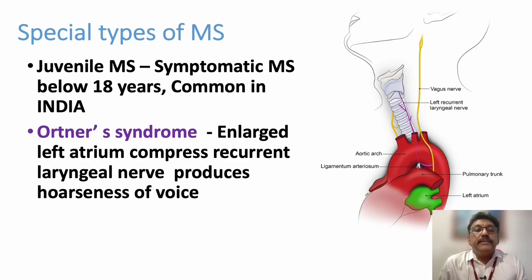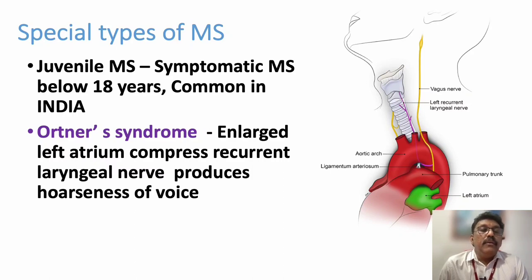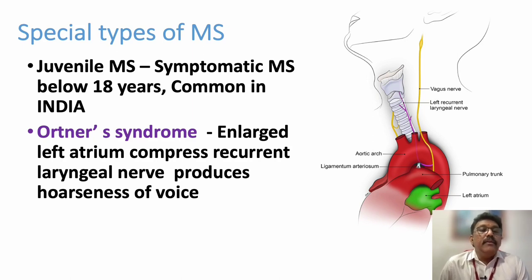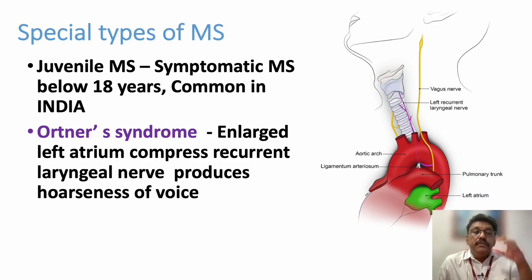There are some special types of mitral stenosis, especially in India. Juvenile mitral stenosis is very common because most patients present to the doctor after many years, as there are initially no symptoms. But in our country, because of repeated attacks of rheumatic heart disease, patients can have early onset of symptoms. This is called juvenile mitral stenosis.